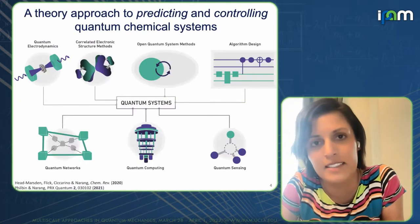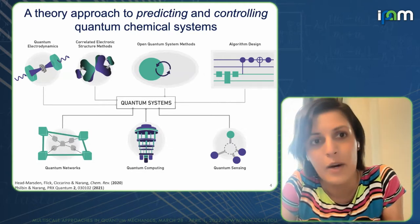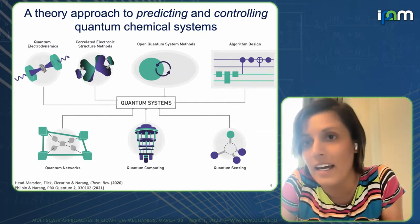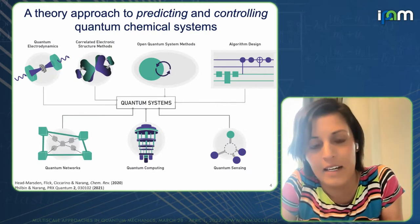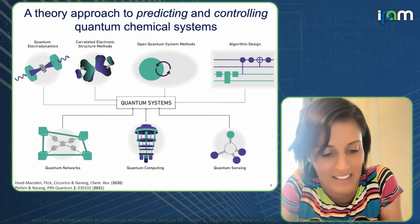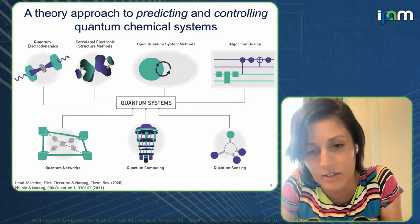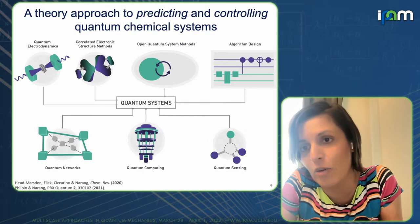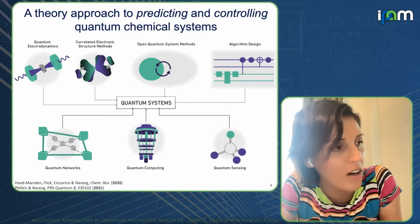We think about how we can describe some of these condensed systems, and to a theory audience I don't need to belabor this too much, but just to say that we combine ideas in quantum electrodynamics, thinking about correlated electronic structure, as well as how we can intersect these with open systems methods and possibly leverage both quantum and classical resources to simulate these systems. The very nice talks earlier in the week describing hybrid quantum-classical algorithms — I think this area is really taking off.